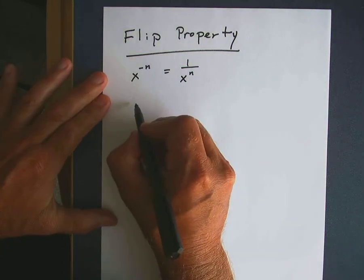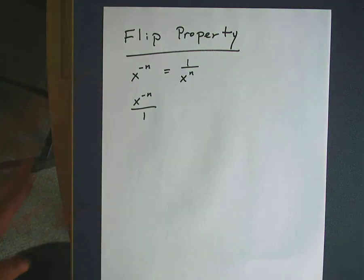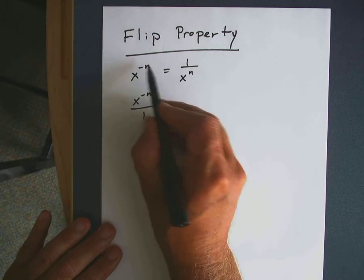Another way to write this expression, if we want to write it as a fraction, would be like that, where this would be the numerator. It's understood that's a numerator over 1.